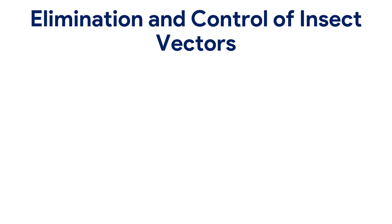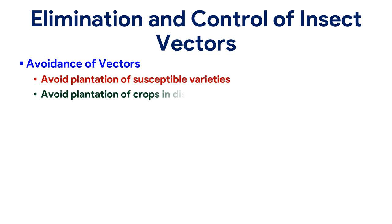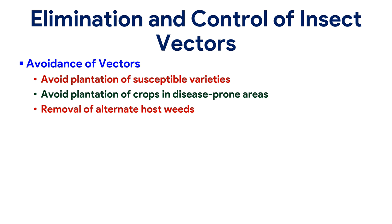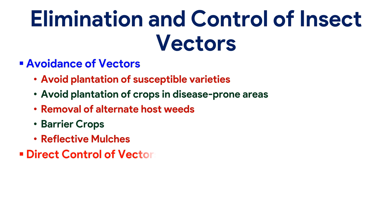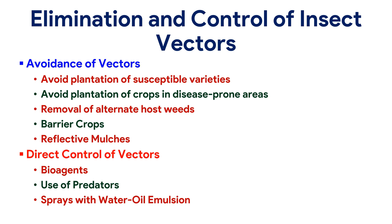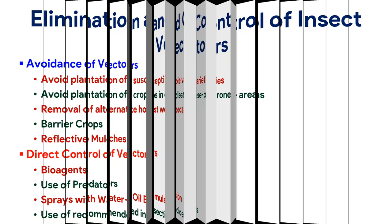Elimination and control of insect vectors includes avoidance of vectors: avoid plantation of susceptible varieties, avoid plantation of crops in disease-prone areas, removal of alternate host weeds, use of barrier crops and reflective mulches. Direct control of vectors includes use of bioagents, use of predators, sprays with water-oil emulsion, and use of recommended insecticides.